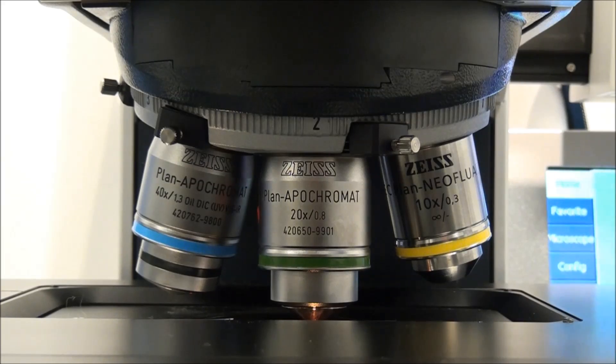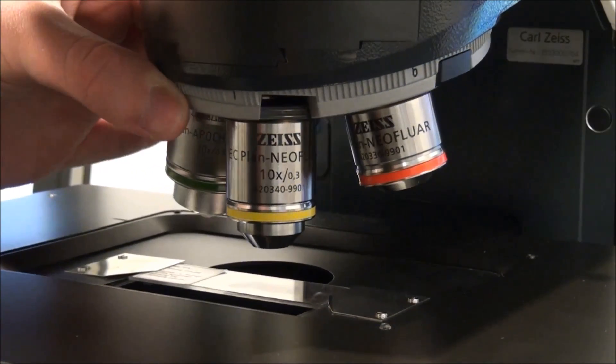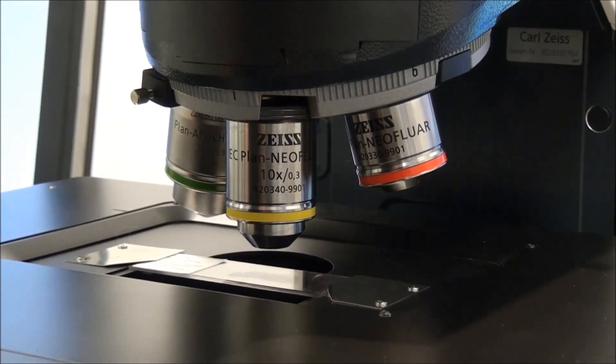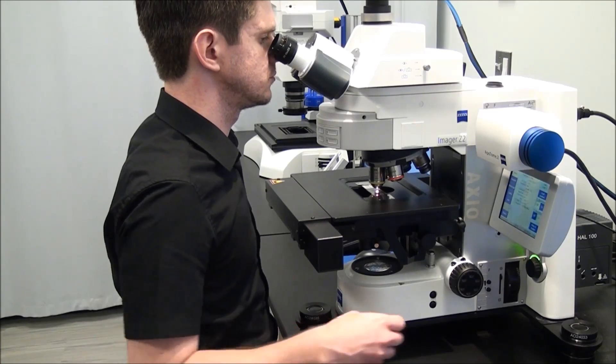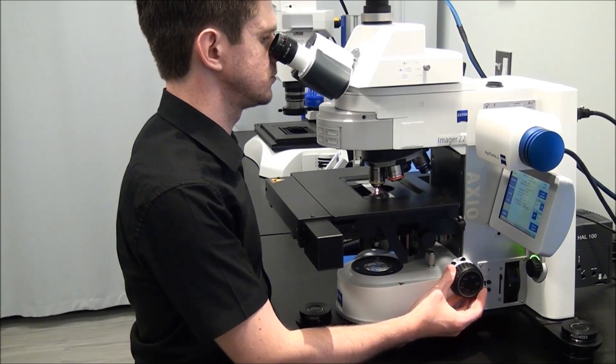Step 7: Swing in the 10x objective or whichever lens you are using. Proper Kohler can only be set up for magnifications of 10x and greater. Focus on your specimen using the focus knobs. Kohler alignment is based off of this objective focus. Make sure that your sample remains in focus for the rest of the alignment steps.